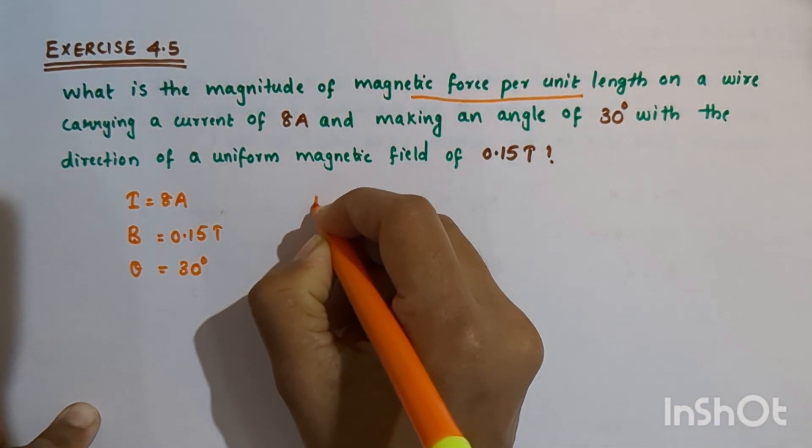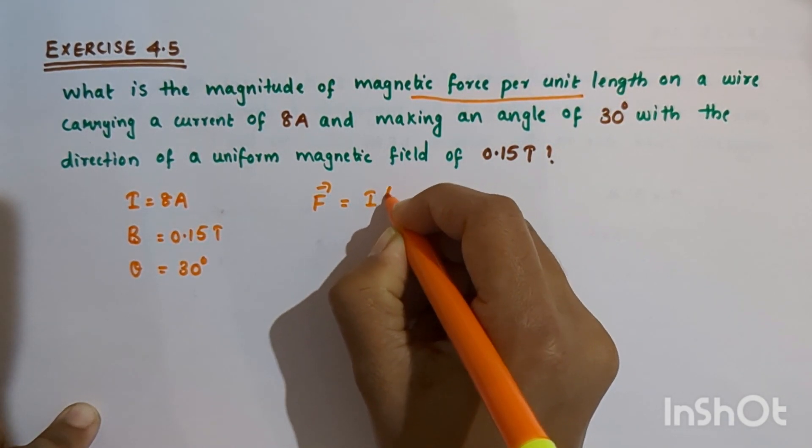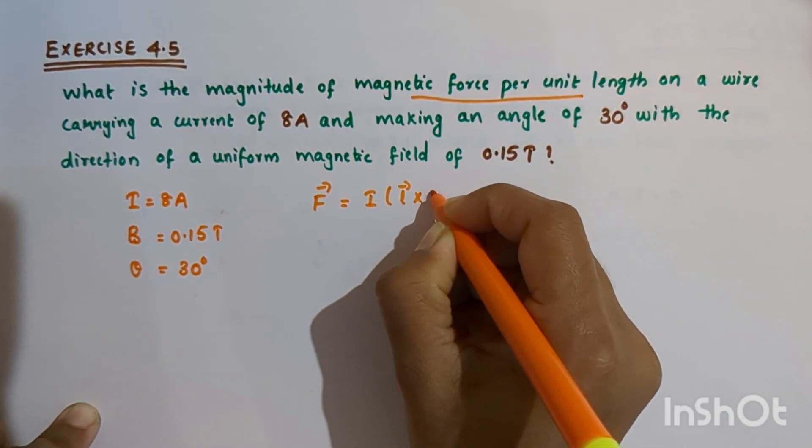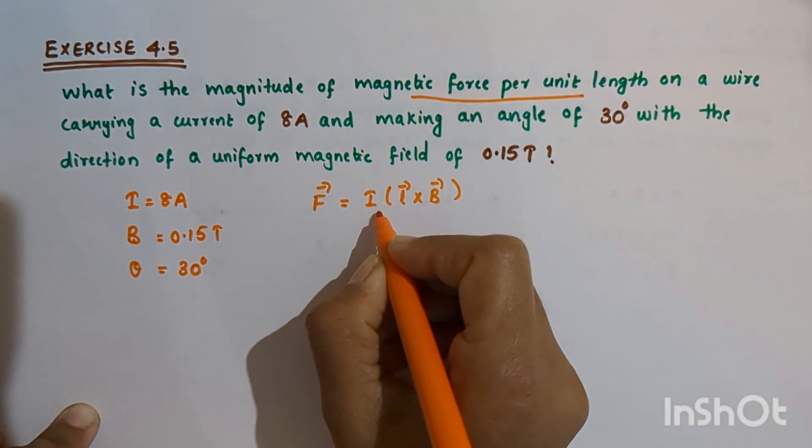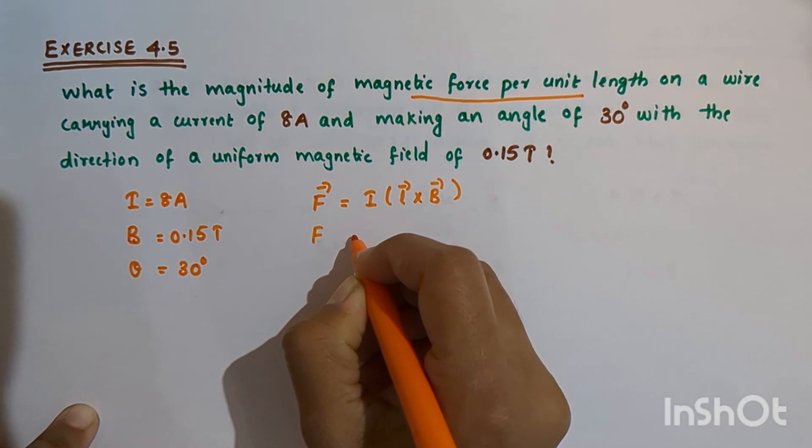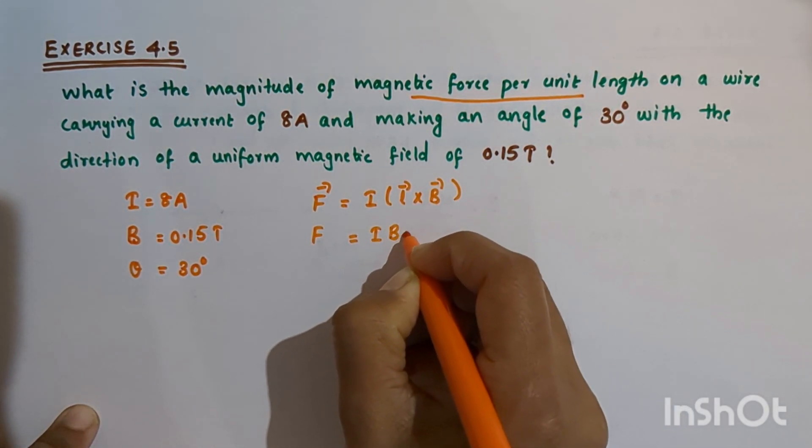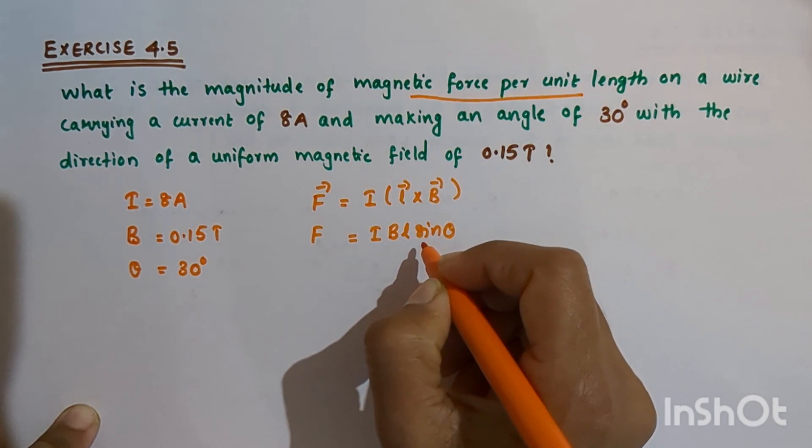We have the general expression for force acting on a current carrying wire of length L in magnetic field B: vector F equals I times vector L cross vector B. The magnitude of that force is IBL sin theta.